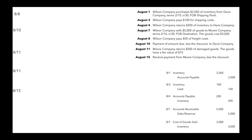On August 8th, Wilson Company pays $50 of freight costs. Back on the 7th the sale had FOB destination, which means the seller has to pay for shipping. So here they're paying $50 of freight costs. Whenever the seller pays for shipping, they debit freight out and credit cash for $50.